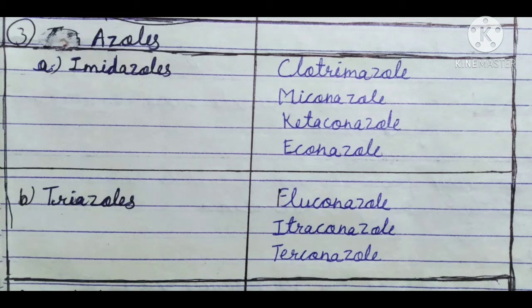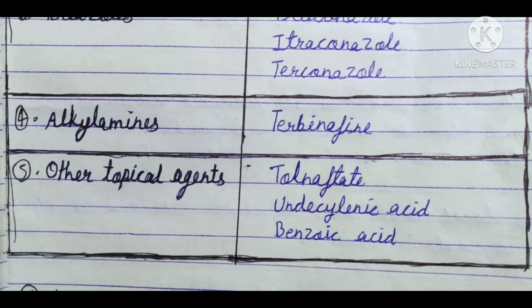Continuing the classification: Part A and Part B of Azoles. Then fourth category: Alkylamines — drug: Terbinafine. Next: Other topical agents — Tolnaftate, Undecylenic Acid, and Benzoic Acid.